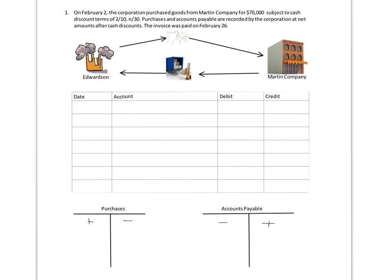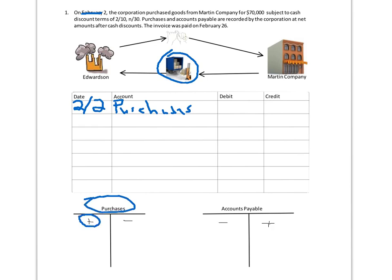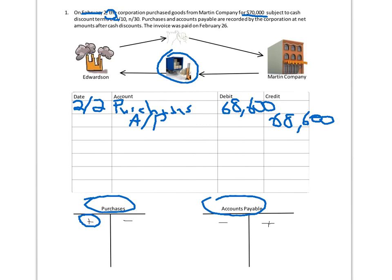To record this transaction on February 2nd, we look at what we received — inventory. Since we're using the periodic method, we record it in purchases. We debit purchases — not $70,000 but taking 2% off for the 2/10 discount — so we record $68,600. We credit accounts payable, our current liability, for $68,600. That's our promise to pay them in the future.